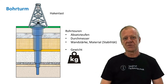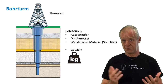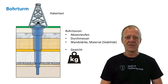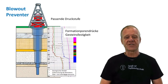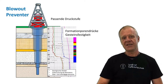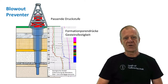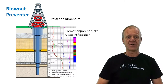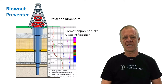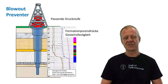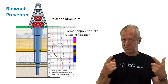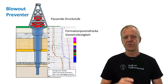When that's done we look again at the geological profile to estimate the maximum pressures which can occur in the borehole while drilling. This depends on the pressures of the fluids which are found in the pores of the rock — gas, water, or oil. These calculations result in the required pressure level for the blowout preventer, which is placed on top of the borehole and in case of danger can close the well at any time.